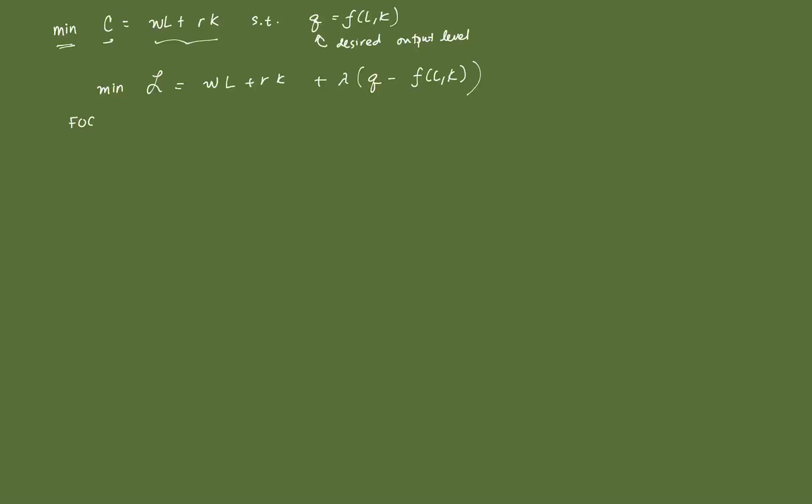that's partial Lagrangian with respect to lambda equal to 0, partial of the Lagrangian with respect to L equal to 0, and partial of the Lagrangian with respect to K equal to 0. So, this one, this is just going to be equal to the constraint, so that's Q minus F(L,K) equal to 0.